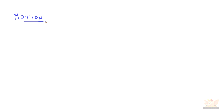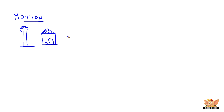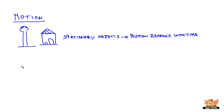Motion. There are two types of objects called stationary and moving. Tree and house are stationary objects. In this case, the position remains with time.